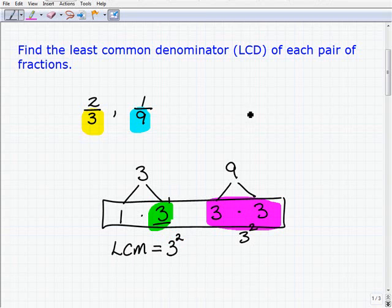which means that the LCD is nine. Okay, so recall that the LCM or the LCD is the lowest number that both of these numbers go into. Okay, so if I ask you, what's the lowest number you can think of that both three divides into and nine divides into, that number is nine. Okay, so let's move forward.